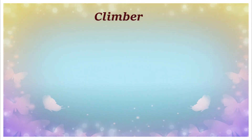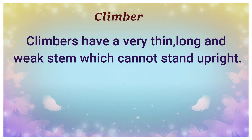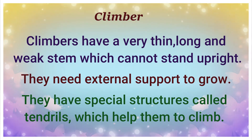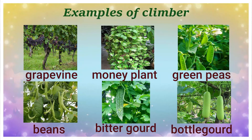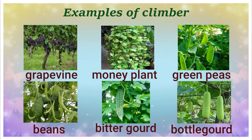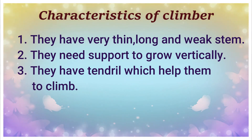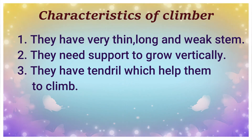The next type is climbers. Climbers have a very thin, long, and weak stem which cannot stand upright — they need external support to grow. They have special structures called tendrils which help them to climb. Examples of climbers include grapevine, money plant, green peas, beans, bitter gourd, and bottle gourd. They grow vertically, meaning they rise straight up.